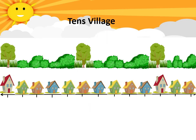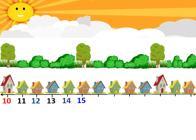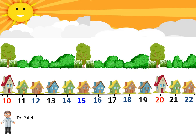It was a bright sunny day at the tens village. Tens village had beautiful houses placed next to each other in one straight line. Each house had a number. The first house was numbered 10, the next was 11, then 12, then 13, and the sequence continued until we reached house number 22. House number 10 and house number 20 were very special houses — not only did their numbers end with zero, but they also belonged to two doctors. In house number 10 lived Dr. Patel, and in house number 20 lived Dr. Sam.